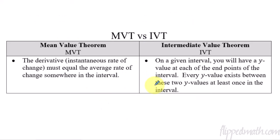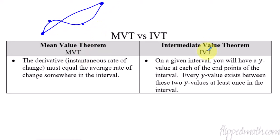The mean value theorem is used in our justification — there has to be a point somewhere on the interval two to six where the slope is negative 5. Now, before the next set of questions, let's make sure we understand the difference between the mean value theorem and the intermediate value theorem, because they are different. The mean value theorem: if you take the average rate of change between two points, you know there's at least one other place with that same slope. The intermediate value theorem: given an interval with a low y-value and a high y-value, every single possible y-value in between those must exist.